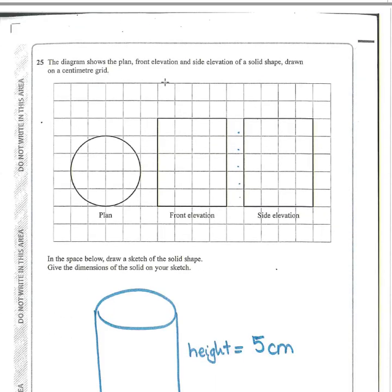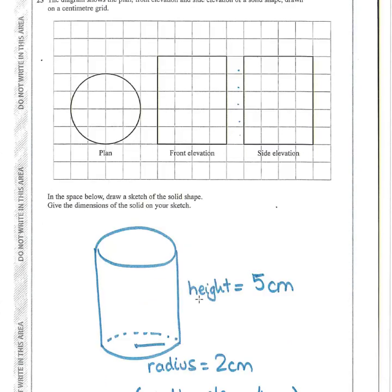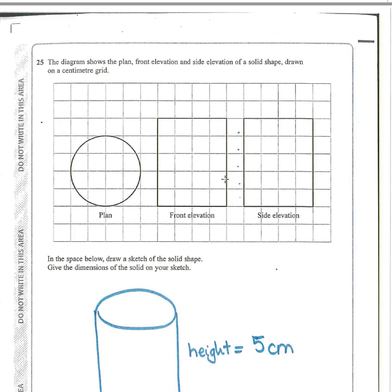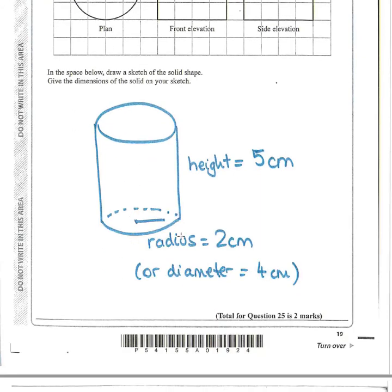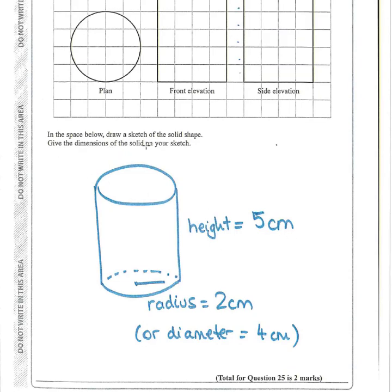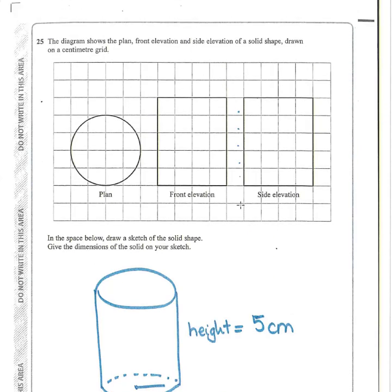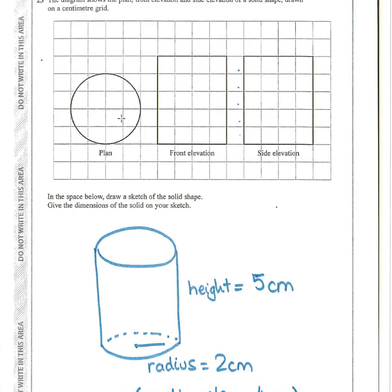Question 25: the diagram shows a plan, front elevation and side elevation on a centimetre grid. The plan (view from above) shows a circle; the front and side elevations show a rectangle — so the solid shape is a cylinder. Many people got the shape right but lost a mark because they didn't give dimensions. The height is 5 cm (count 5 squares) and the radius is 2 cm (from centre to rim, 2 squares).